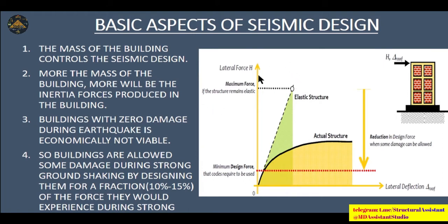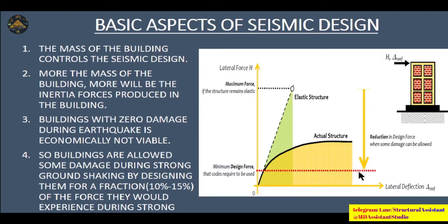Here you can see a graph showing lateral force versus lateral deflection. This is the actual structure behavior, this is the minimum design force that a code requires, and this is the behavior of the elastic structure. The maximum force if the structure remains elastic is shown, but the actual structure behavior follows a different path. The minimum design force is what the structure is designed for as per the codes.